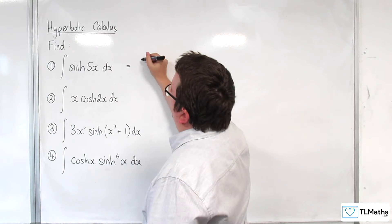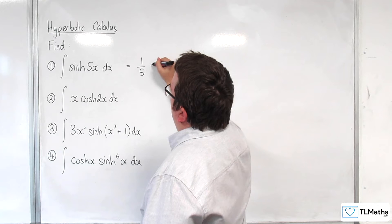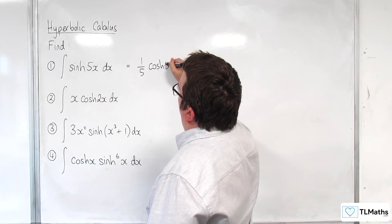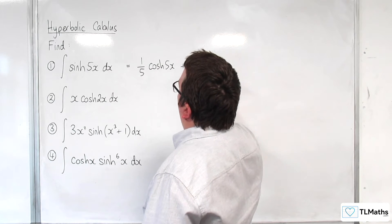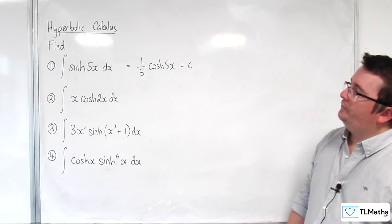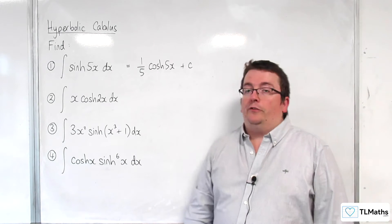And the integral of this will be one-fifth cosh of 5x plus a constant c. So that's the first one.